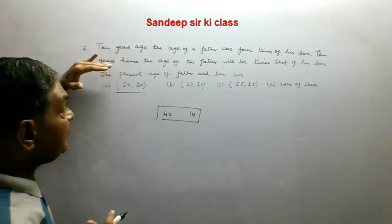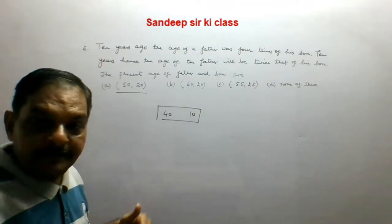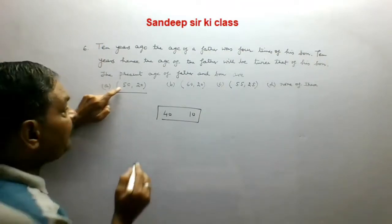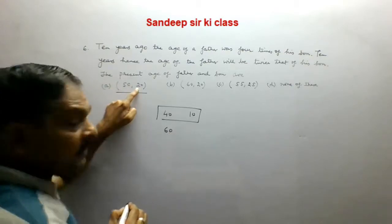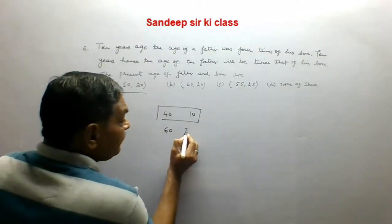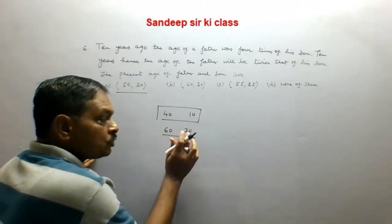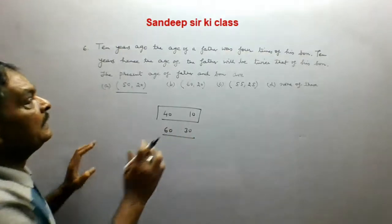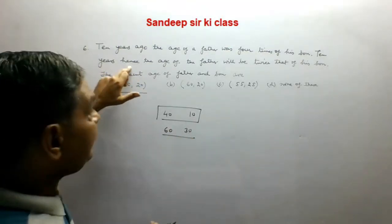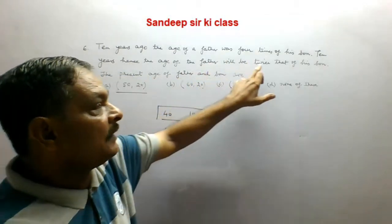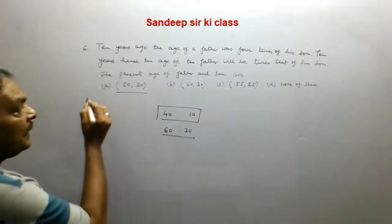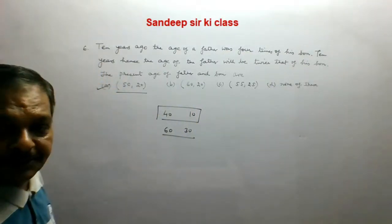The second condition: 10 years hence means after 10 years. After 10 years the father's age will be 60 and the son's age will be 20 plus 10, which is 30. Surely 60 is two times 30, so the second condition is also correct, and option A is the correct option.